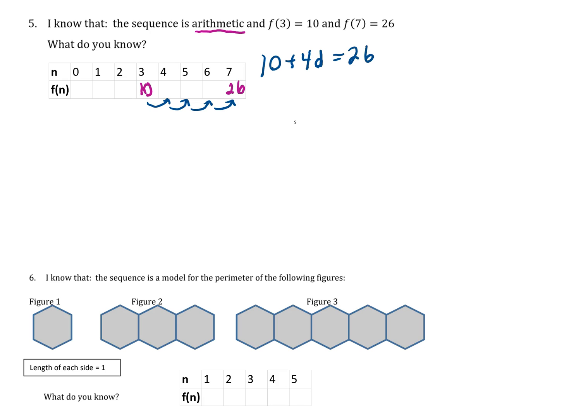That gives me an equation I can solve: 10 + 4d = 26. Subtract 10 on both sides, I get 4d = 16, and divide both sides by 4, so we know that the common difference for this problem is 4.